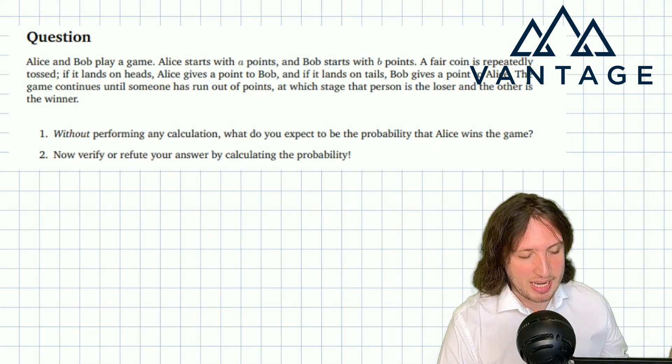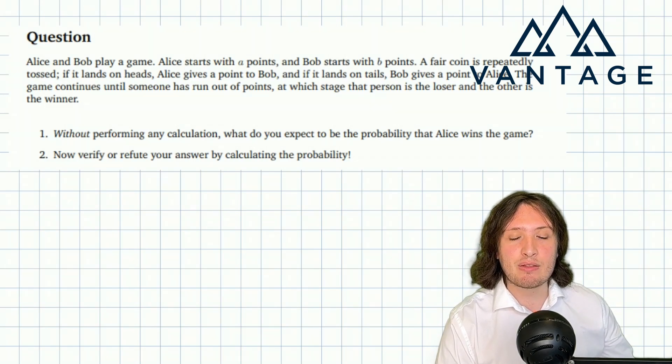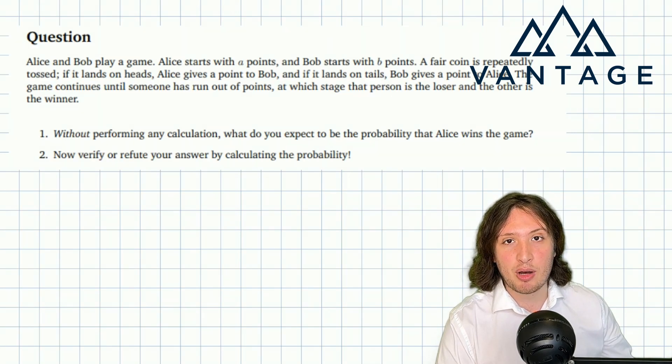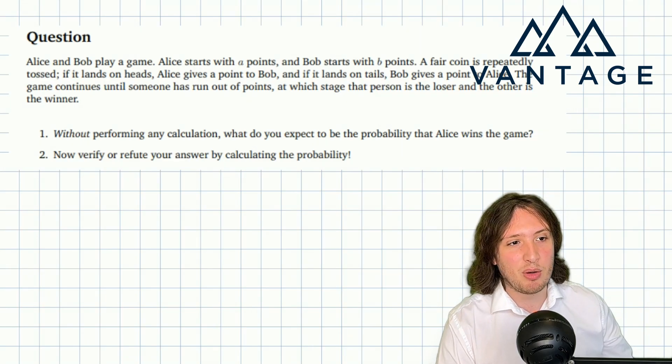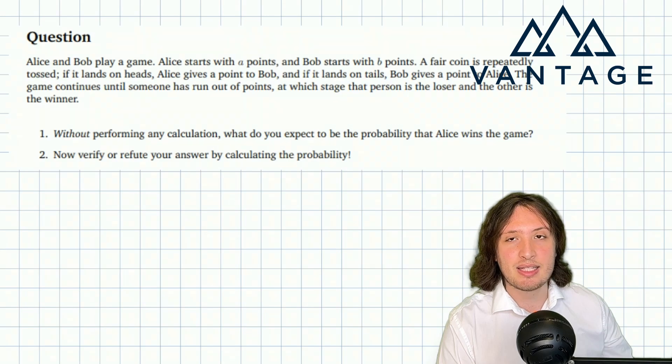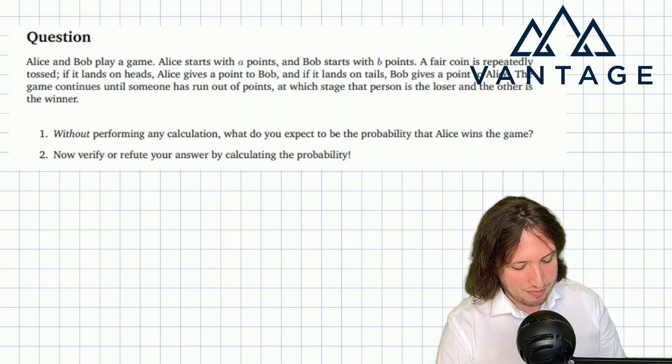In this problem, Alice and Bob play a game. Alice starts with a points, Bob starts with b points. A fair coin is repeatedly tossed. If it lands on heads, Alice gives a point to Bob, and if it lands on tails, Bob gives a point to Alice. The game continues until someone's run out of points, at which stage that person is the loser and the other is the winner.